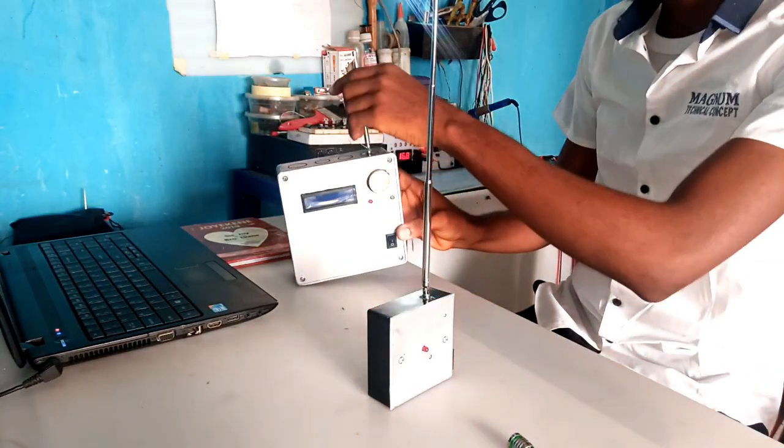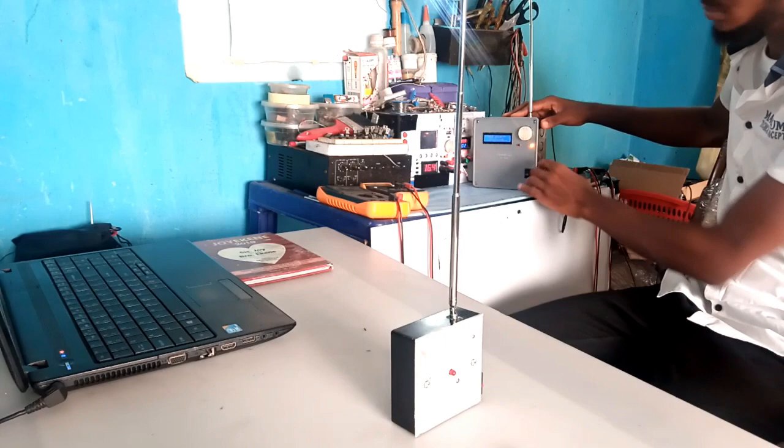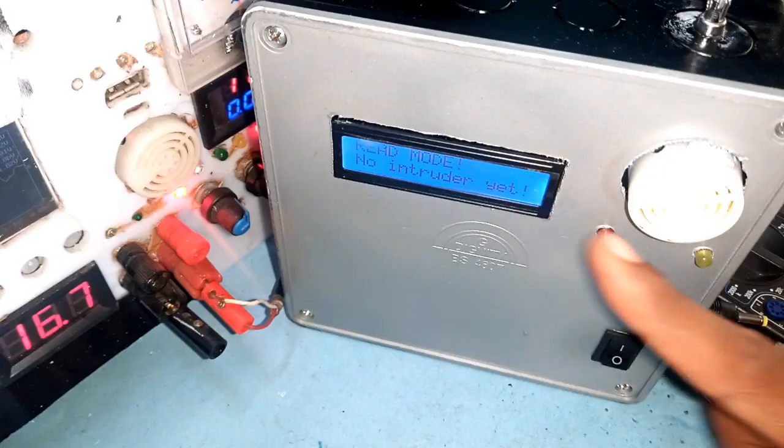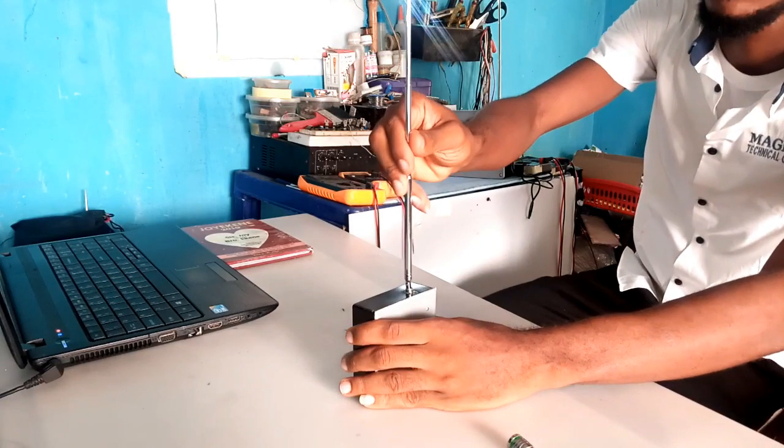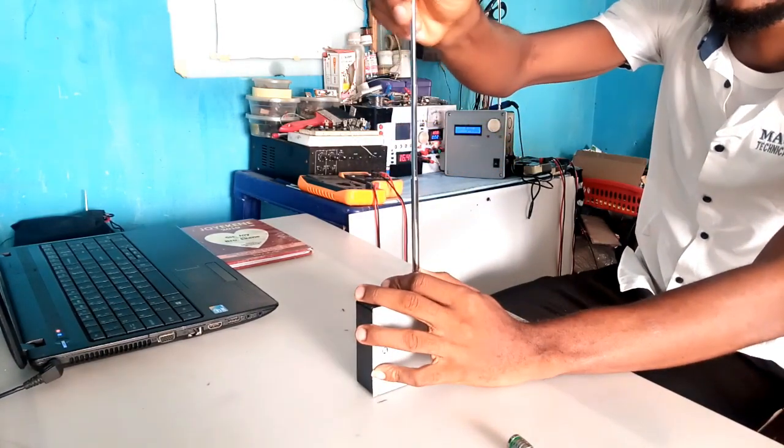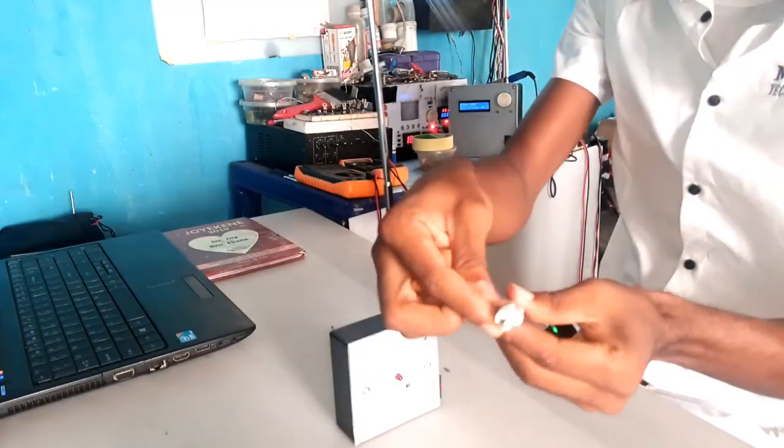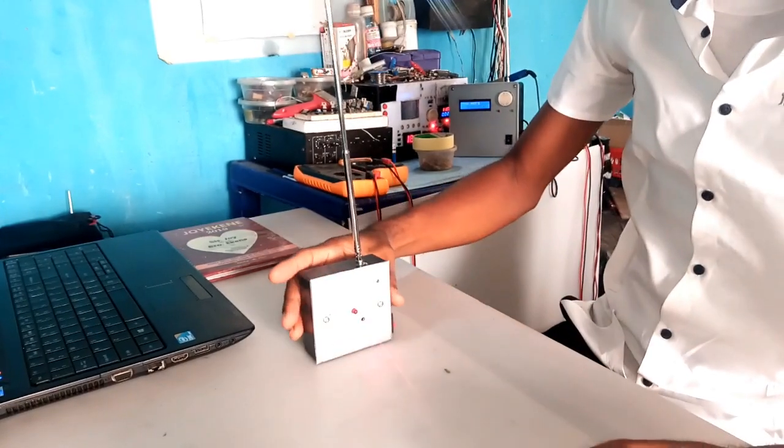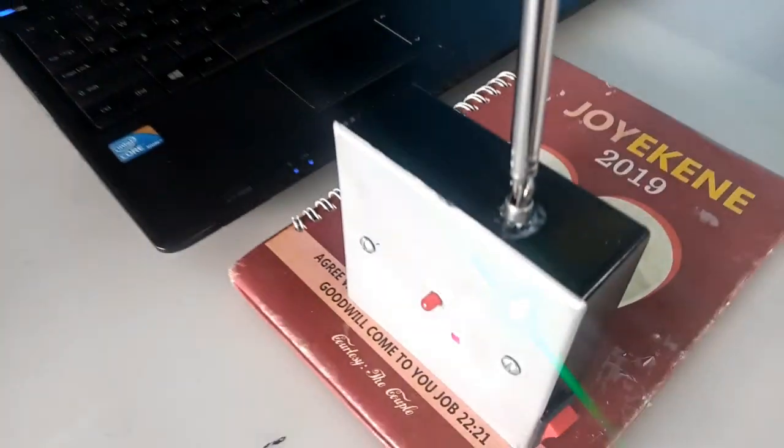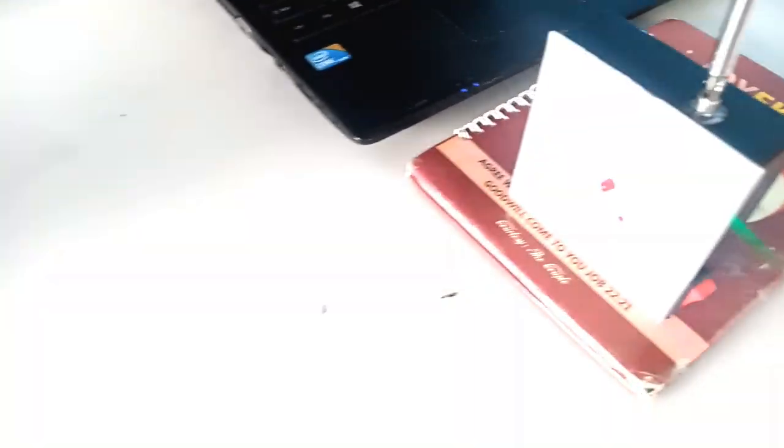I set up the receiver as I have it powered. I align the laser beam pointing on the sensor part of the transmitter. Having all this arrangement ready is now time for test.